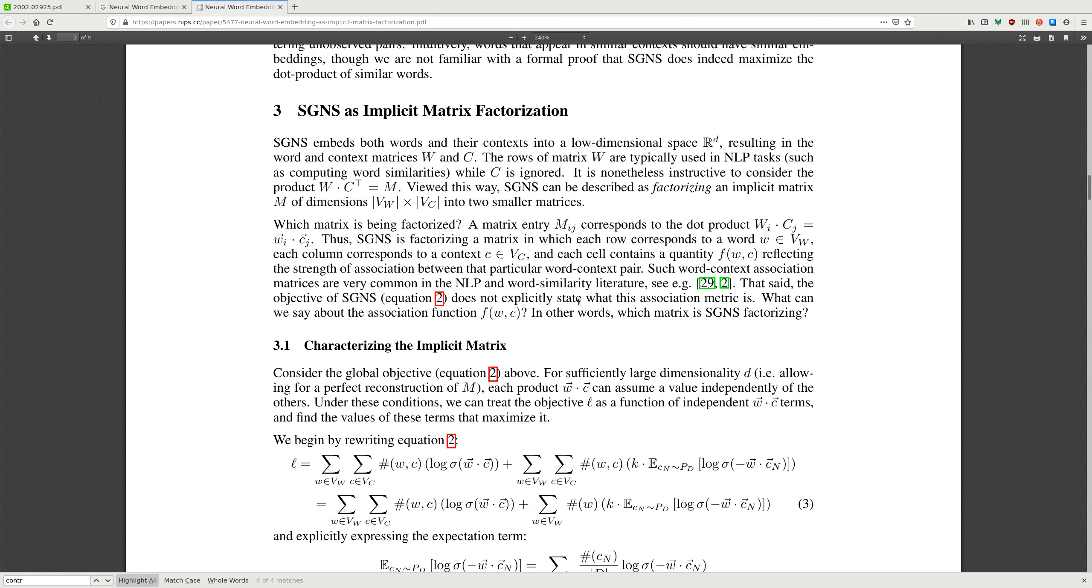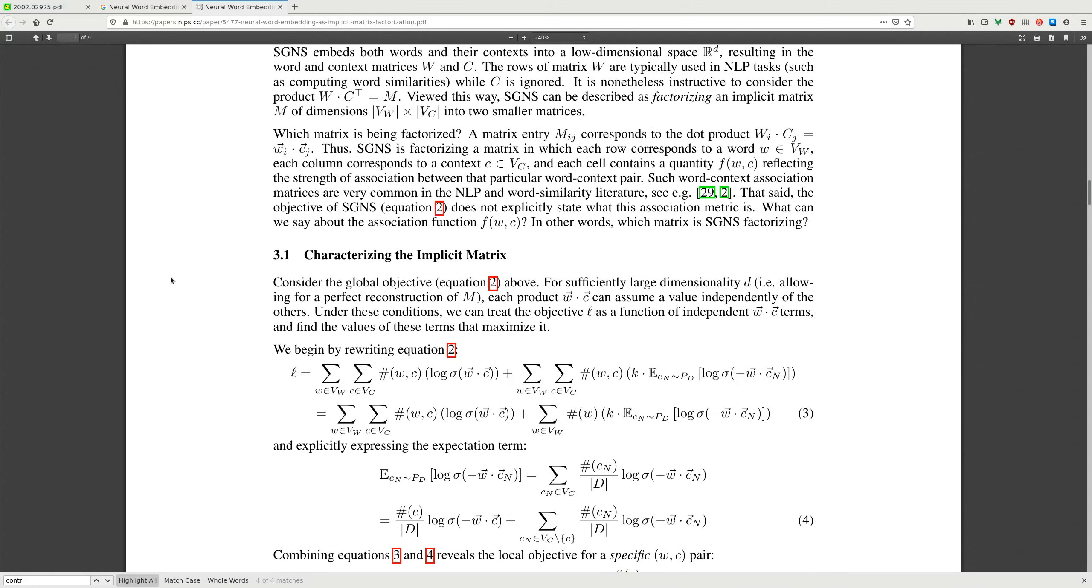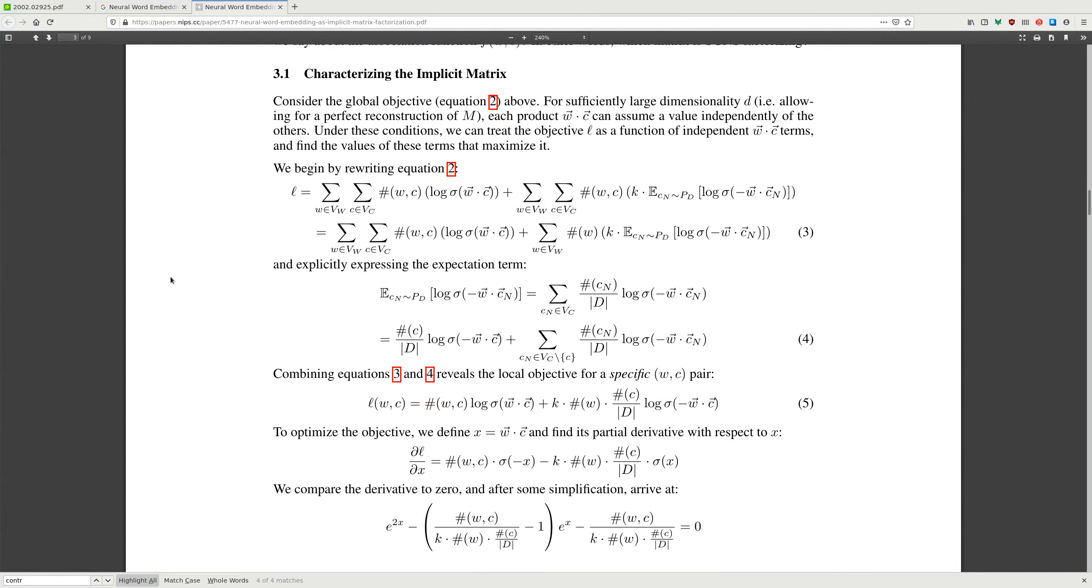Which matrix is being factorized? A matrix entry corresponds to the dot product, thus SGNS is factorizing a matrix in which each row corresponds to a word, each column corresponds to a context, and each cell contains quantity F, the word-context function, reflecting the strength of association between a particular word and word-context pair. Such word-context association matrices are very common in distributional similarity literature. The objective SGNS equation does not explicitly state which association matrix it is. What can we say about the association function F? In other words, which matrix is SGNS factorizing?